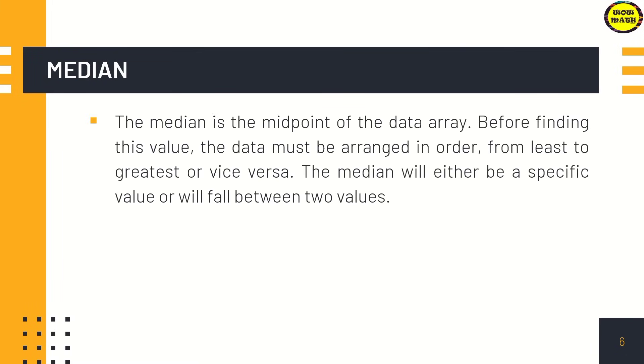Median. The median is the midpoint of the data array. Before finding this value, the data must be arranged in order from least to greatest or vice versa. The median will either be a specific value or will fall between two values. For example, if you have given data with odd numbers, there is one middle data and that is the median. We have 5 data here, so the median here is x sub 3.